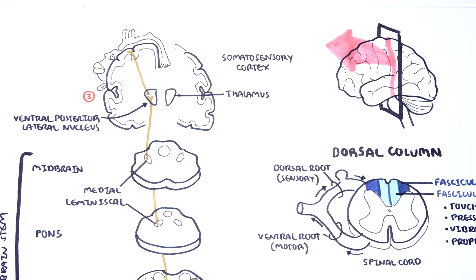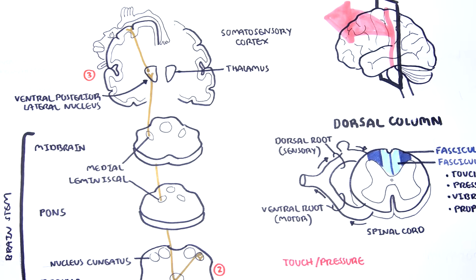Sensation felt on the left side of the body is perceived by the right side of the brain, as shown. Similarly, sensation perceived on the right side of the body is perceived by the left side of the brain.